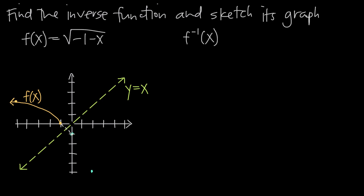If we graph all those reflected points, we get the inverse function, which is the reflection of the original function over the line y equals x. We call it f negative 1 of x, the inverse function.